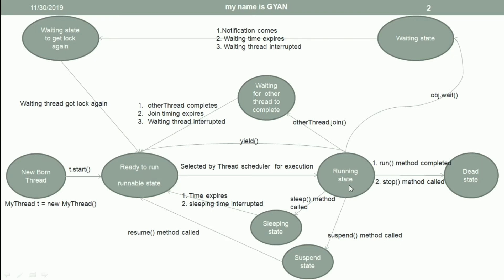If a thread is in the running state and goes to sleep, then the thread will go to the sleeping state. After the sleeping time expires, or if the thread is interrupted during sleeping, the thread will again go to the ready to run state. All threads in the ready to run state are eligible to be scheduled, so after sleeping time expires a thread never goes directly to the running state — it goes to the ready to run state.